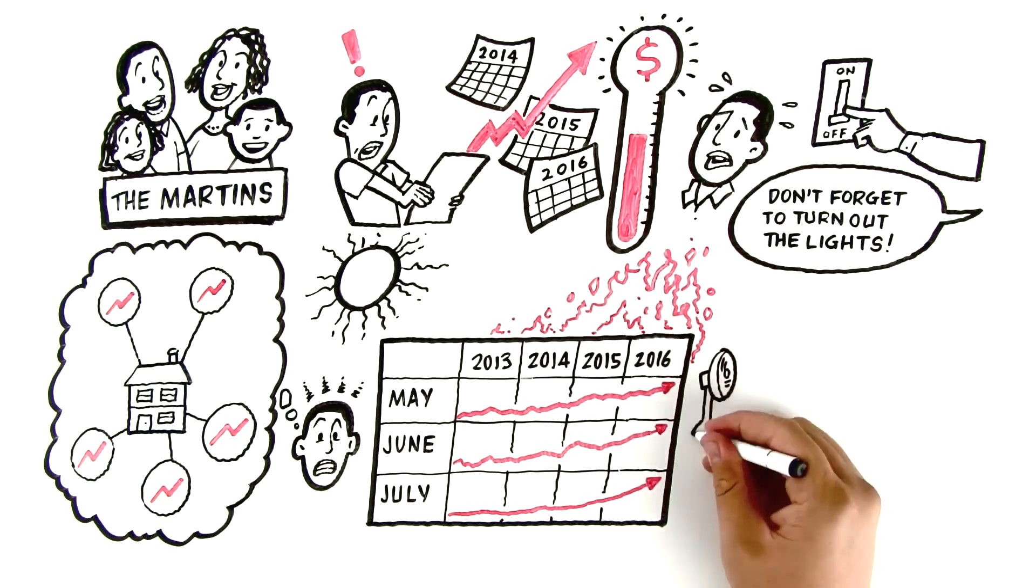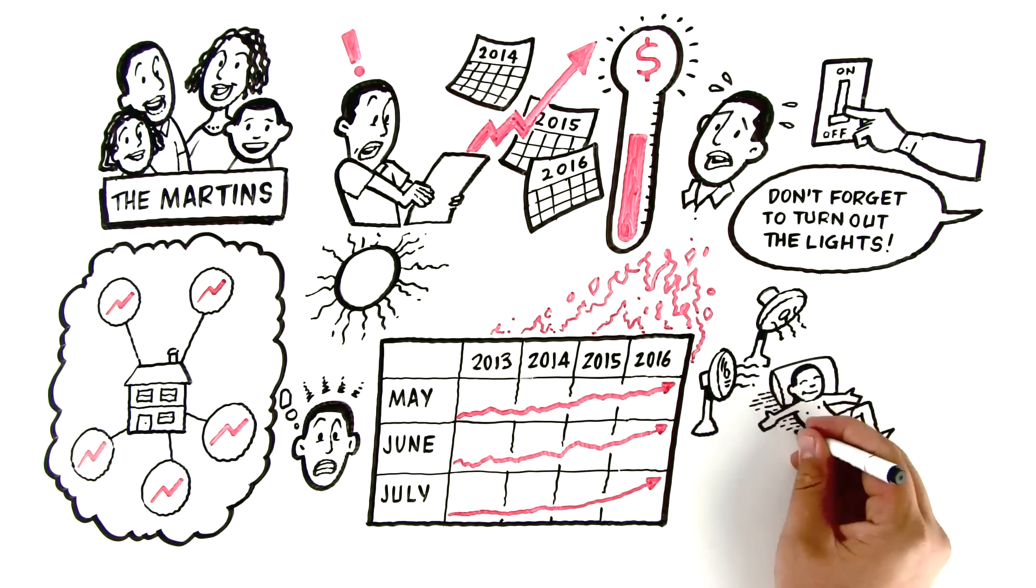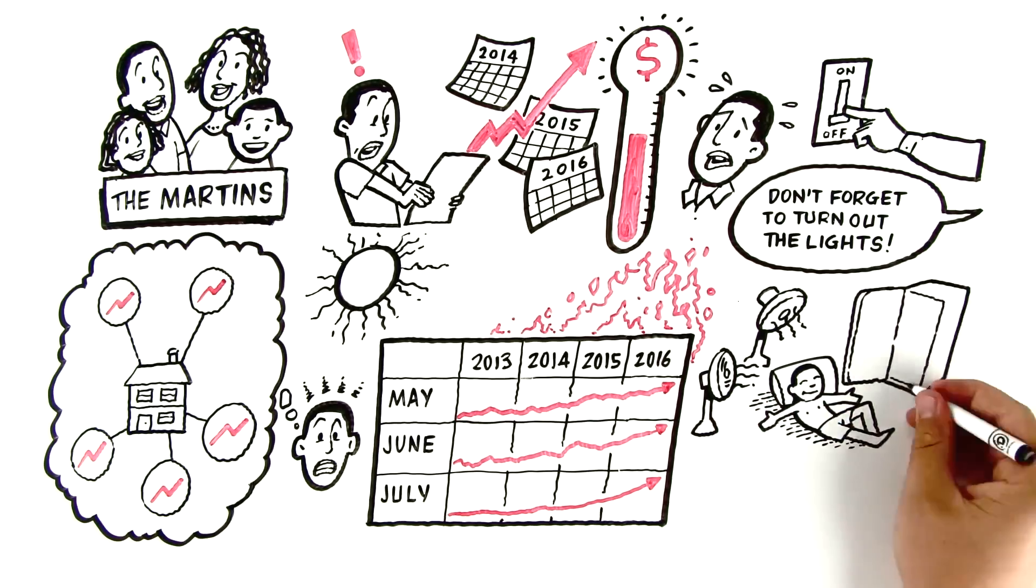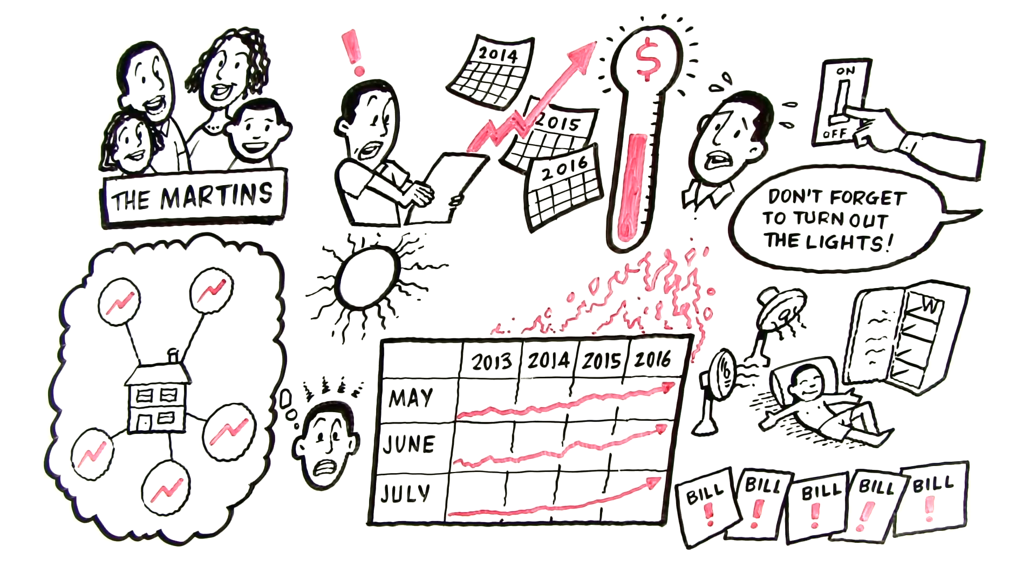Of course, when the sun comes out, on come the air conditioners, fans, and dehumidifiers. And because it's warmer in the house, refrigerators and freezers are running more. And though Jim hasn't thought too much about it, this has been the major reason his bill has jumped so high.